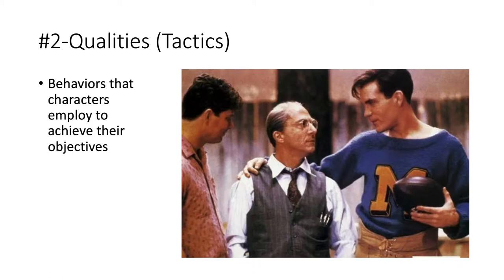In a play, you try different tactics in order to get your goal — those shades of variation we talked about last class when we discussed beats and units. You want to add variety. If you're just trying the same tactic — 'Please can I have a cookie? Please can I have a cookie?' — it's going to come across as Johnny One Note with no variety. But if you see the different ways — first to beg, then to demand, trying different tactics with the same objective — they all begin with 'to' followed by a verb, keeping it future tense and active toward the other person.